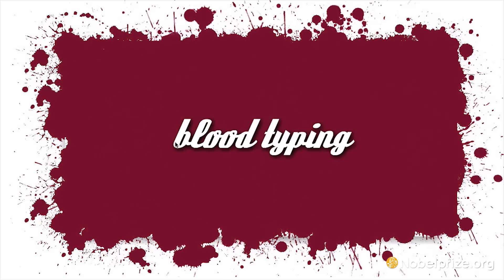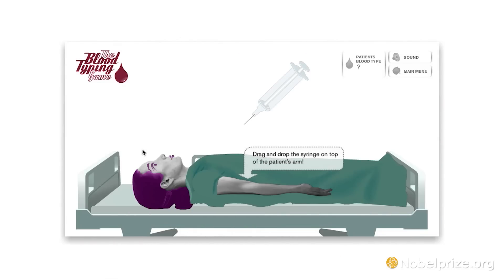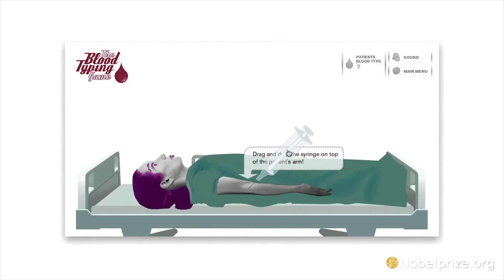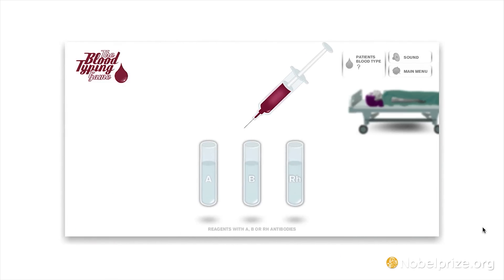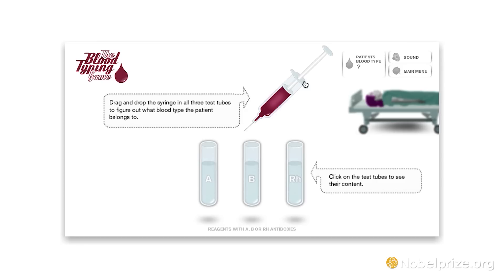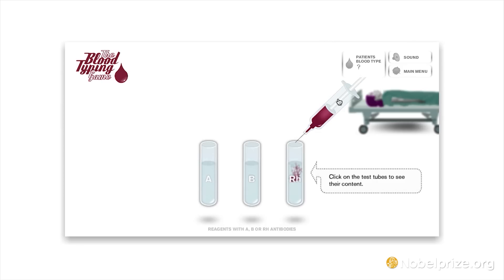When you receive your patient, you need to discover their blood type before performing the transfusion. First, use the syringe to draw your patient's blood and deposit it into three test tubes.